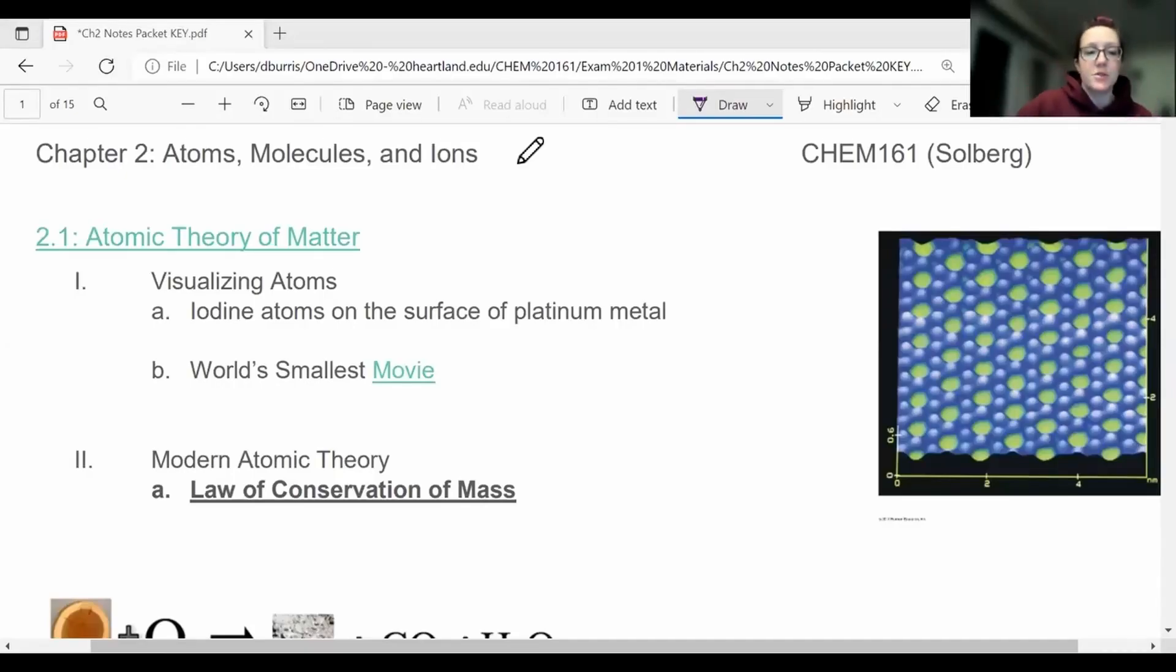Okay, so this is the beginning of chapter two. We're just doing sections 2.1 to 2.3 today. And the first section here is on the atomic theory of matter. We're going to kind of go through some important principles and then how the model of the atom was discovered, essentially.